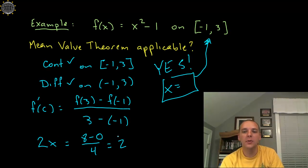If 2x equals 2, then we obviously see that x equals 1, and sure enough, 1 is in this interval from minus 1 to 3.